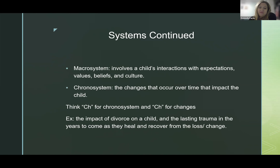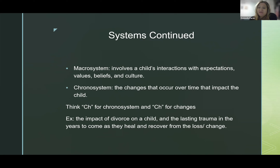We have a few more systems. The macrosystem involves a child's interactions with expectations, values, beliefs, and cultures in their lives. The chronosystem refers to the changes that occur over time that impact the child's development — think CH for chronosystem and CH for changes. An example would be the effects of divorce on a young child and the lasting trauma in the years to come as they heal from the loss and change.